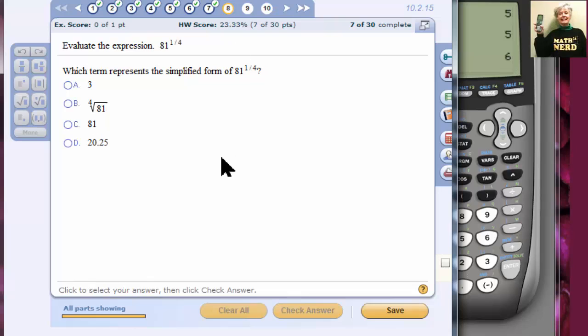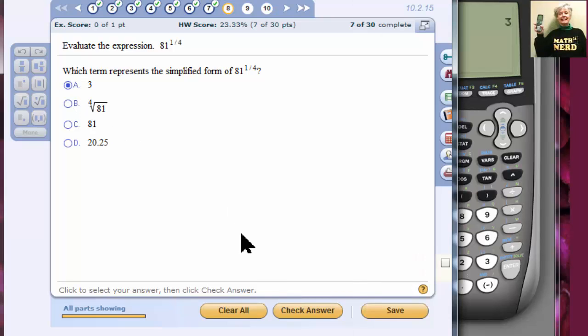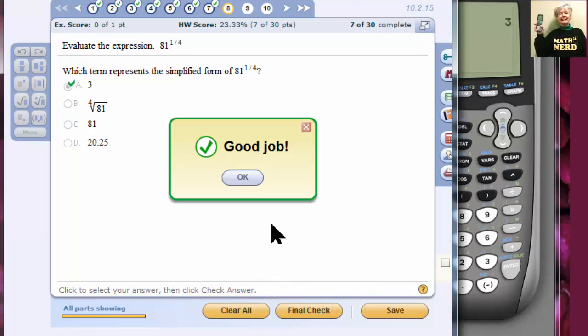8. 81 to the 1/4 power. You see, this is really just so that you can practice with the calculator. Because you will need to know how to use the calculator. 81 carat. 1 divided by 4. Enter. Got it. The answer is 3. Correct.